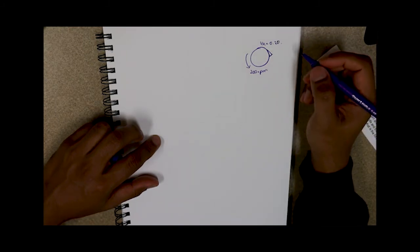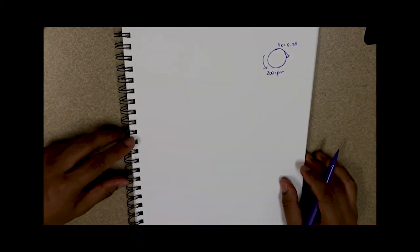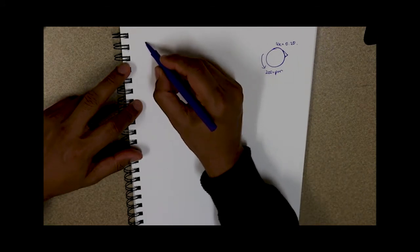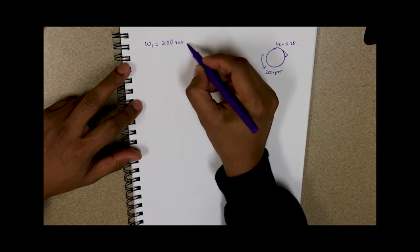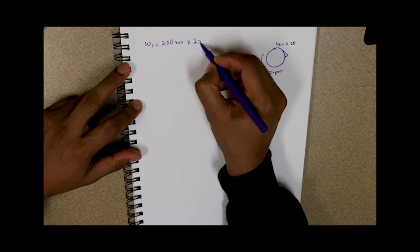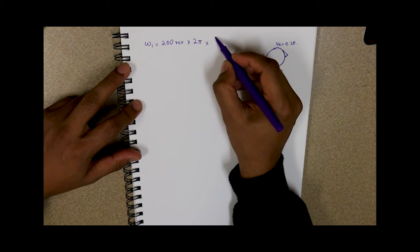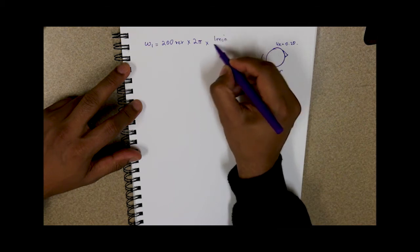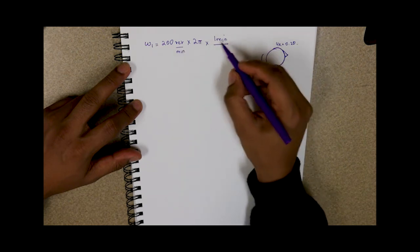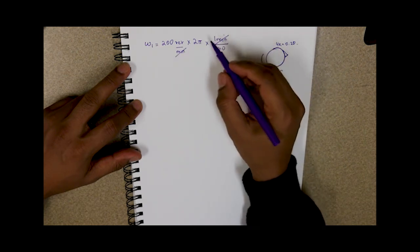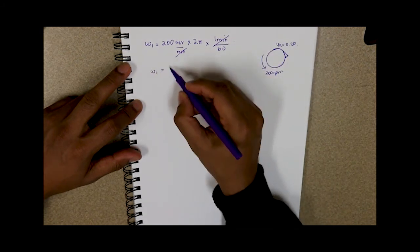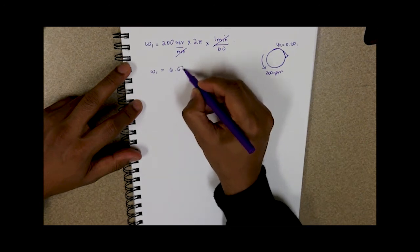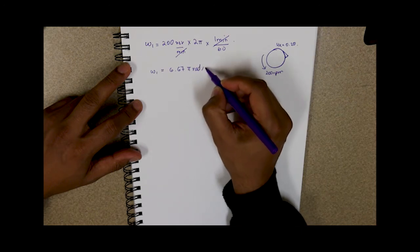First, what we can do is calculate our initial angular velocity. Angular velocity is denoted by the lowercase greek letter omega, so that's initial velocity, is 200 revolutions per minute. So 200 revolutions times 2π to convert it into radians, and we know 1 minute is 60 seconds. So what we end up with here is an initial angular velocity of 6.67π radians per second.